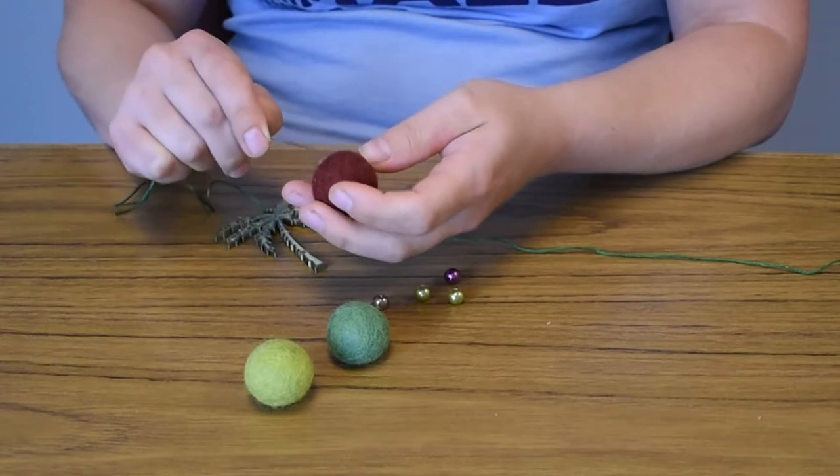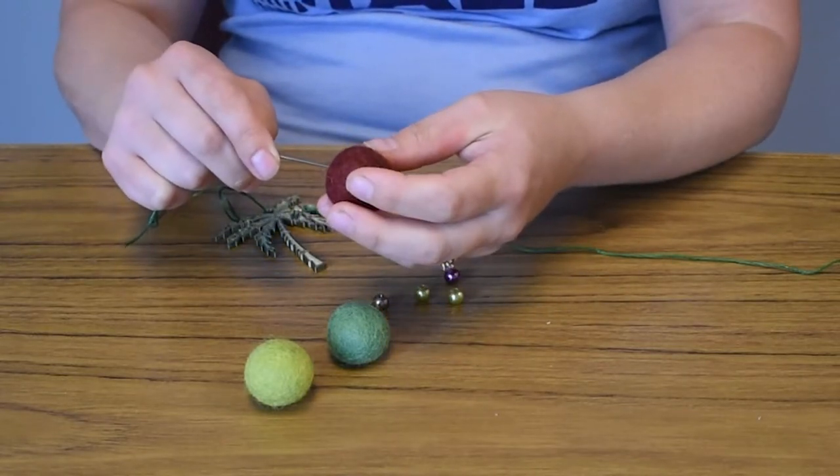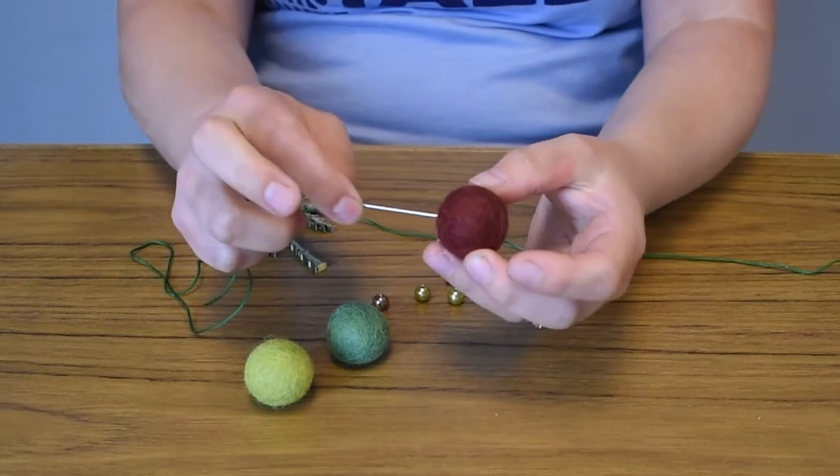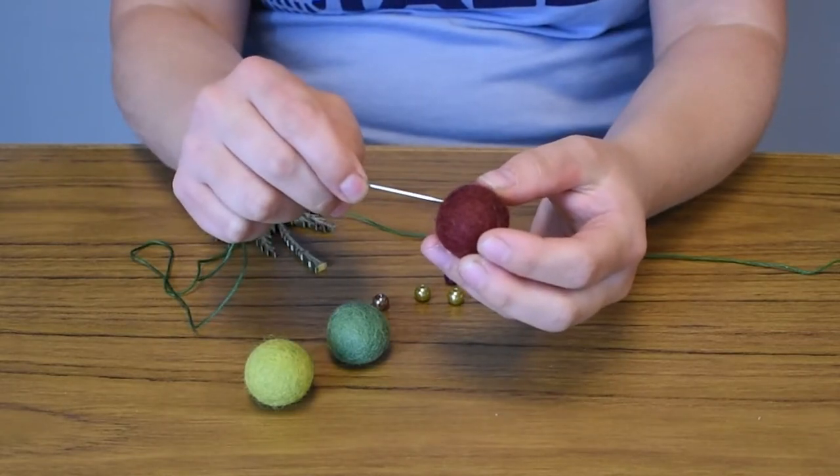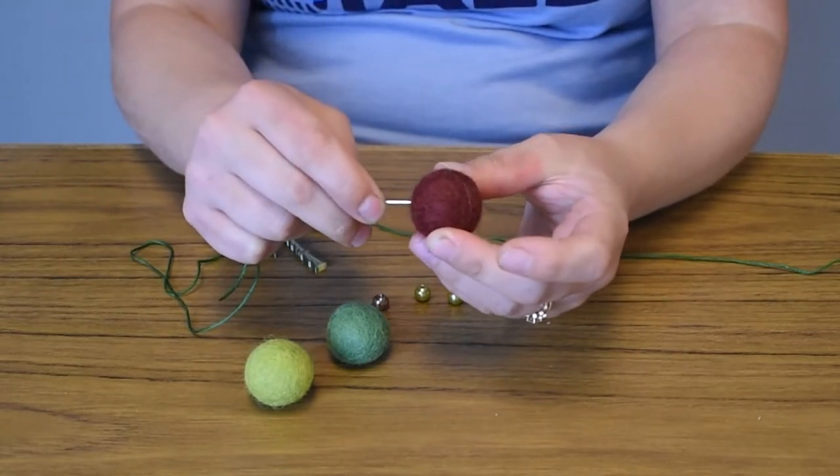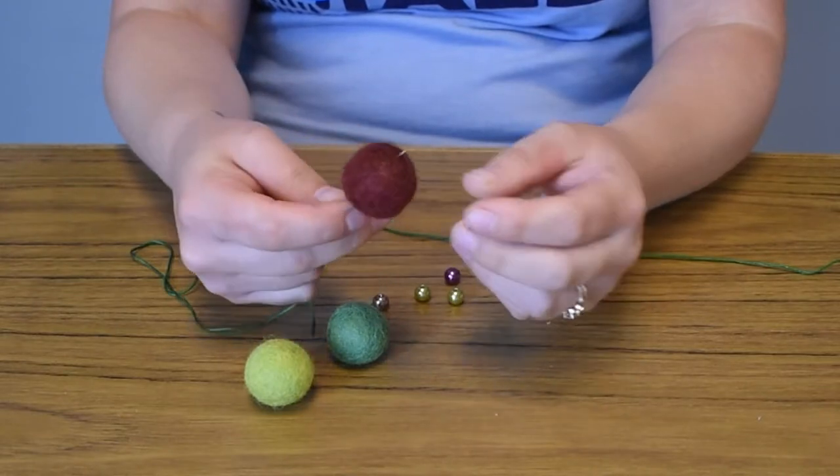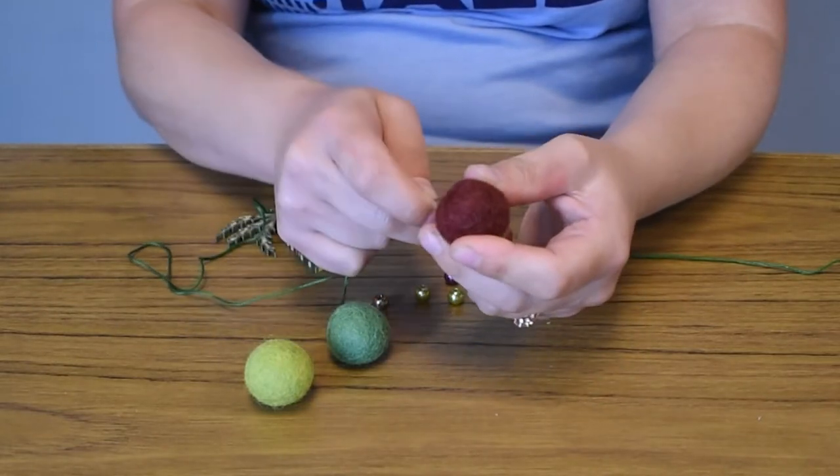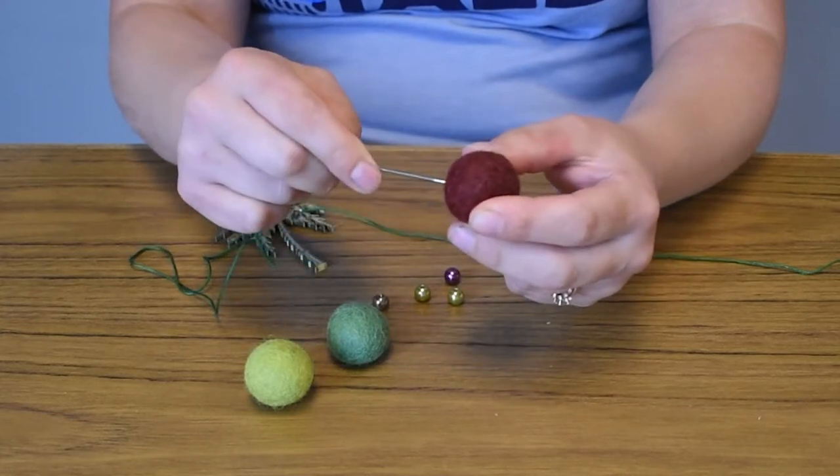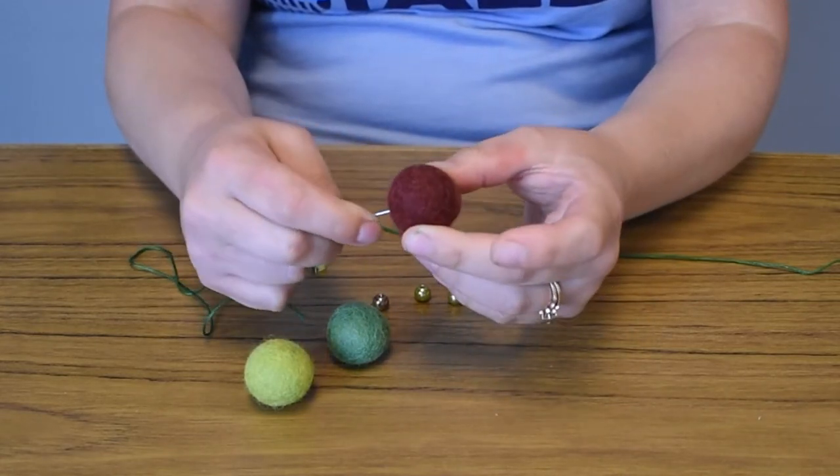So what you want to do is just pick a center and try to keep consistent with it. So wherever my needle goes through, I want it to come through the same spot on the other side. I don't want it to be crooked like this. You want to go straight through the center.